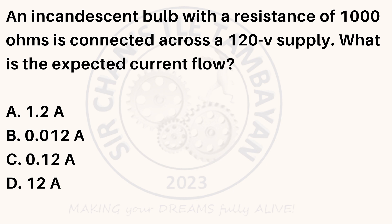An incandescent bulb with a resistance of 1,000 ohms is connected across a 120-volt supply. What is the expected current flow? A. 1.2 amperes. B. 0.012 ampere. C. 0.12 ampere. D. 12 amperes.